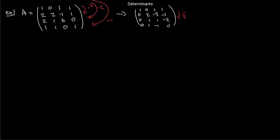Keep going — now clear the column underneath the second pivot, which is the 2 in the (2,2) position. You'll need minus 1/2 times row 2 added to rows below, because there are ones underneath. The matrix you get is: 1, 0, 1, 1; 0, 2, −3, −1; 0, 0, 5/2, −3/2; 0, 0, 0, 1/2.